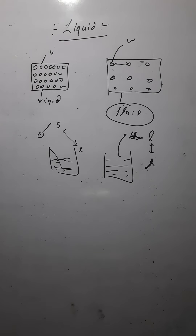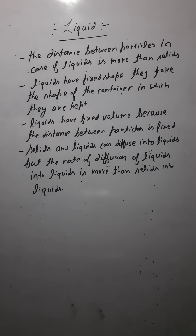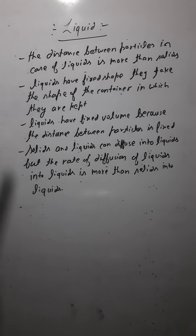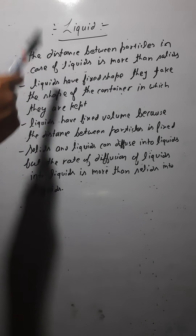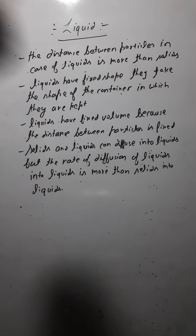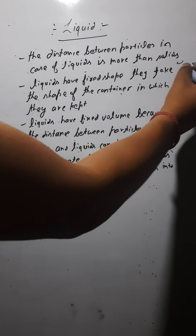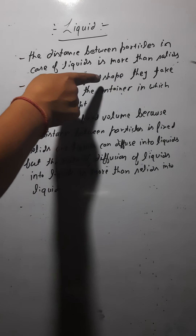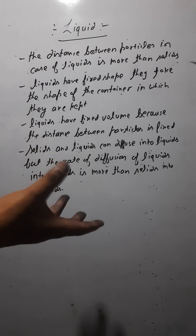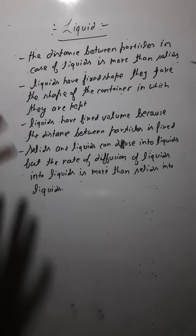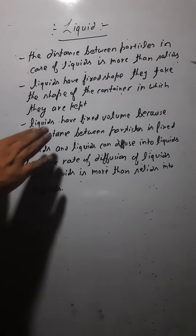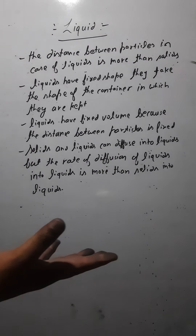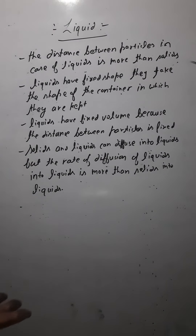So let me write this all down — you have to also write it in your notebook. The first point: the distance between the particles in case of liquid is more than that of the solid — the particles have some distance between them. Second point: liquids do not have a fixed shape; they take the shape of the container in which they are kept. Third point: liquids have a fixed volume because the distance between particles is fixed, so the volume would be fixed — we cannot change the volume.